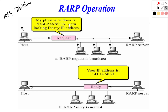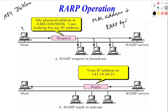With ARP, you use a MAC address to find an IP. With RARP, you make a RARP request to get the IP address. ARP maps MAC address to IP address; RARP maps MAC address to IP address in reverse. This is the concept and this is the request.